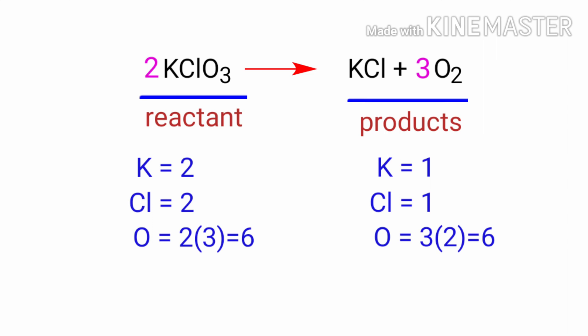The oxygen atoms are balanced, but the potassium and chlorine atoms are unbalanced. To balance that, we need to put a coefficient of two in front of KCl.